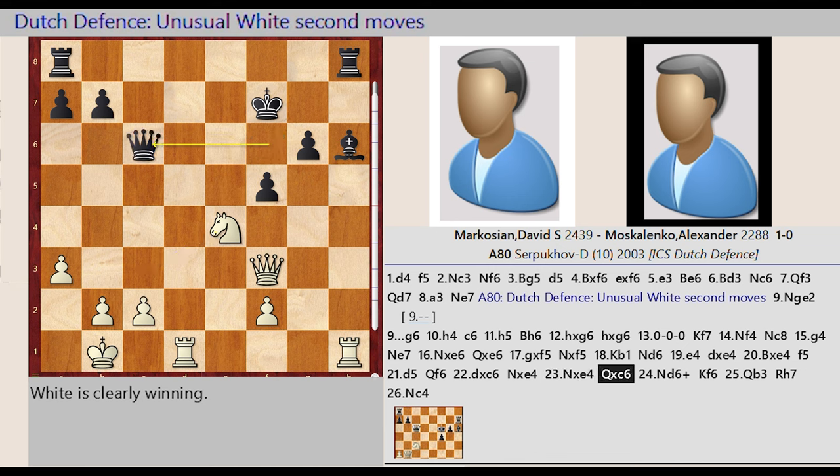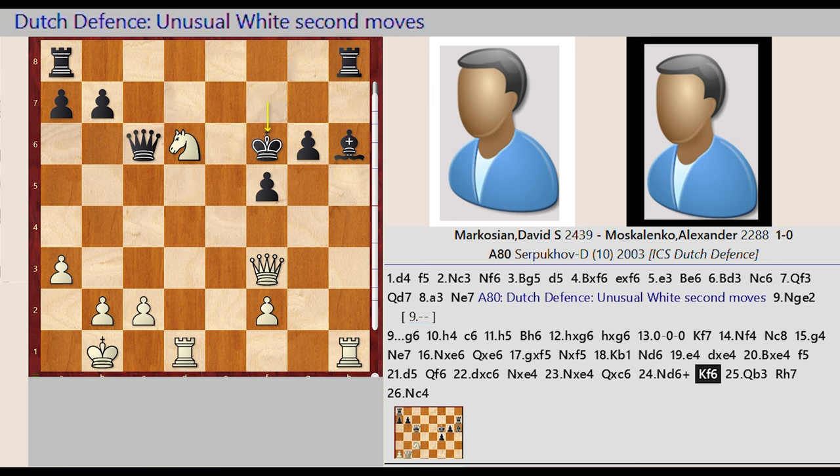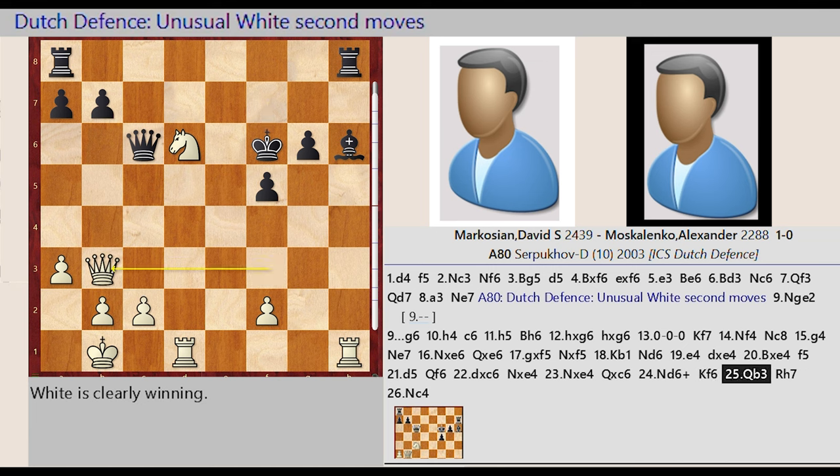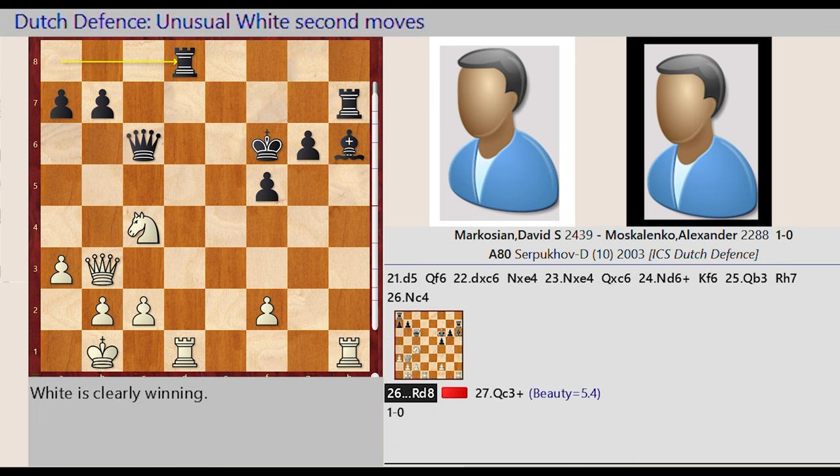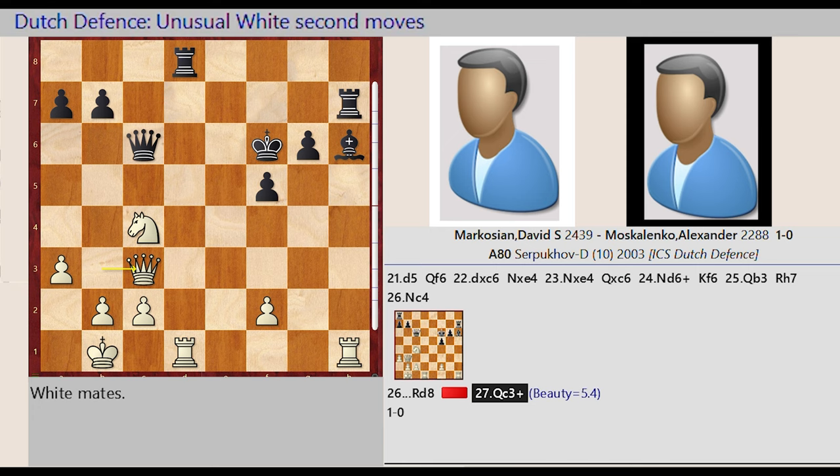knight e4 d6, king f7 f6, queen f3 b3, rook h8 h7, knight d6 c4, rook a8 d8, queen b3 c3. Beauty equals 5.4.